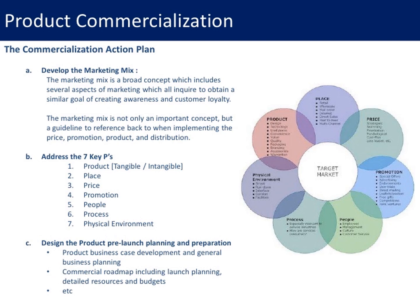The commercialization action plan begins with developing the marketing mix — a broad concept that includes several aspects of marketing aimed at creating awareness and customer loyalty. It serves as a guideline when implementing price, promotion, product, and distribution. The second part is to address the seven key P's: product, place, price, promotion, people, process, and physical environment.